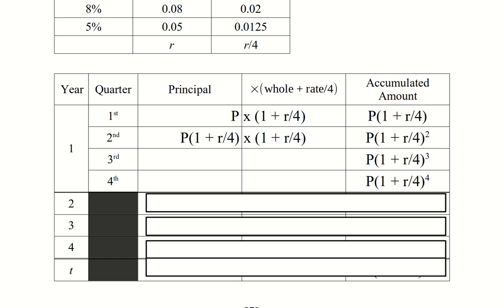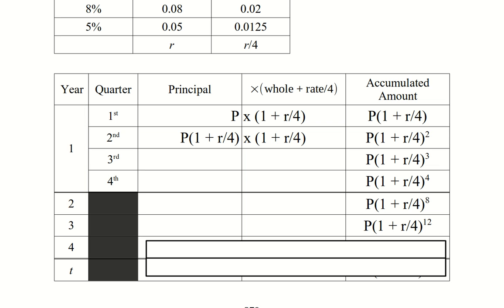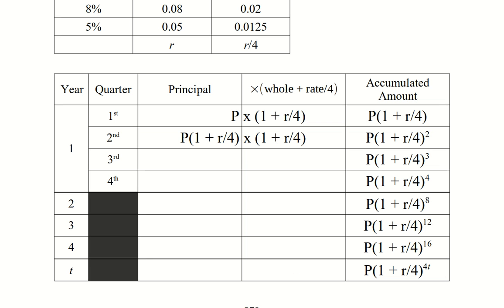Now instead of talking about quarters, let's jump to years. Each year has 4 quarters. At the end of the first year we have 4 quarters, so the exponent is 4. At the end of the second year, another 4 quarters brings us to 8. At the end of the third year, 12 quarters total. At the end of the fourth year, 4 times 4 is 16 quarters. And at the end of t years, we multiply 4 times t, giving us 4t as our exponent.